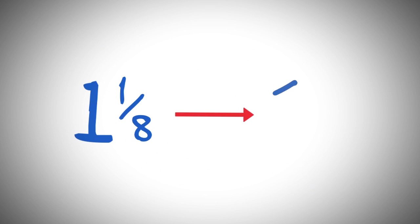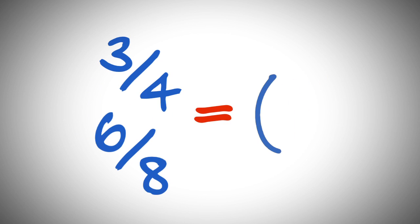One and one-eighth inch becomes one and one. You would say it 'one and one.' Three-quarters of an inch, or six-eighths of an inch, becomes zero and six. You would say it 'zero and six' or 'oh and six.'